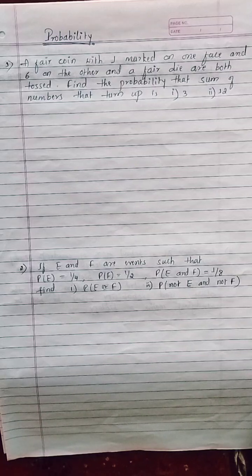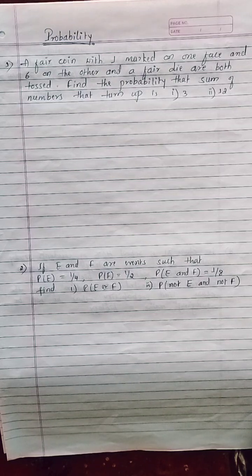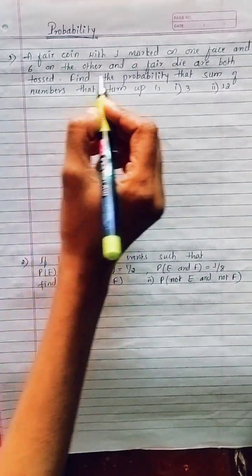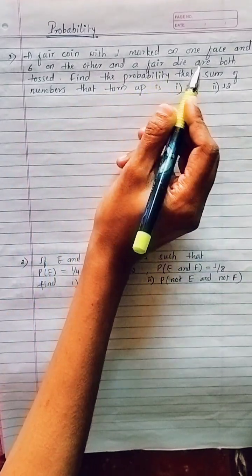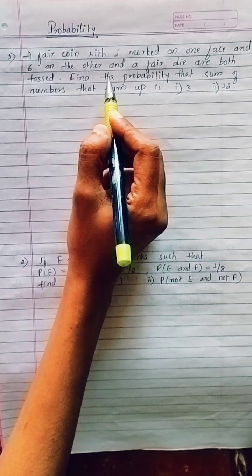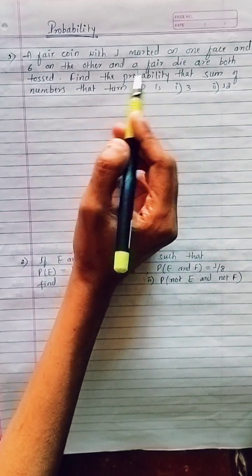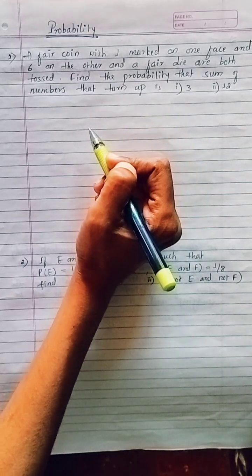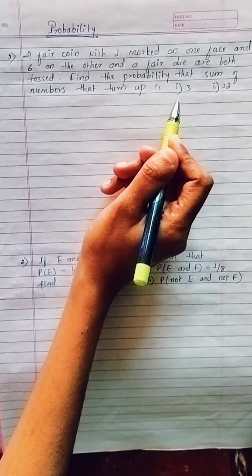Hello students. In this video I am solving the most important questions from the chapter Probability for three marks. The first question is: a fair coin with one marked on one face and six on the other face, and a fair die are both tossed. Find the probability that the sum of the numbers turned up is (i) three, and (ii) twelve.